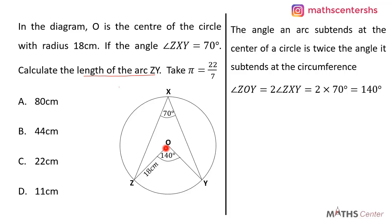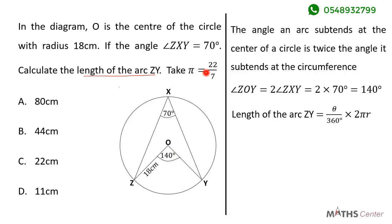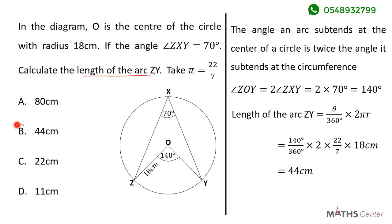So angle ZOY is 140 degrees. We can now find the length of arc ZY. The length of arc ZY equals theta divided by 360 degrees times 2πr, where r is the radius and theta is the angle of the sector. The radius is 18 centimeters and the angle is 140 degrees, with pi as 22 over 7. Substituting gives 140 divided by 360 times 2 times 22 divided by 7 times 18 centimeters, which gives us 44 centimeters. The correct option is B.